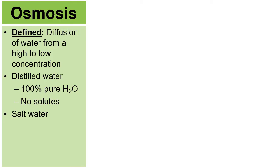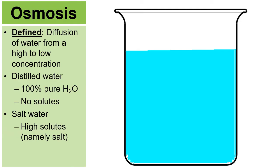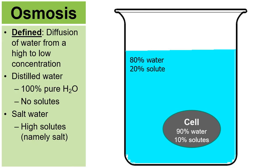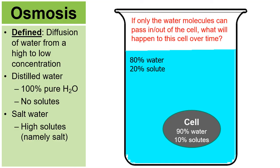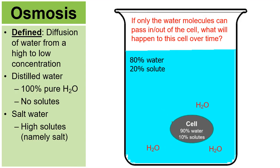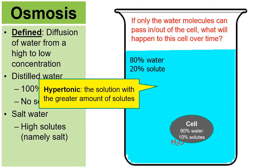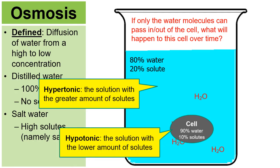Now using salt water: the container is 80% water and 20% solutes. The same cell has 90% water and 10% solutes. Through osmosis, this cell is going to lose water from a high concentration of 90% to a low concentration of 80%, and it will start to shrink and shrivel. In this example, the water inside the beaker is hypertonic (20% solutes is greater than 10%), and the solution inside the cell would be hypotonic — notice it's reversed from the previous example.